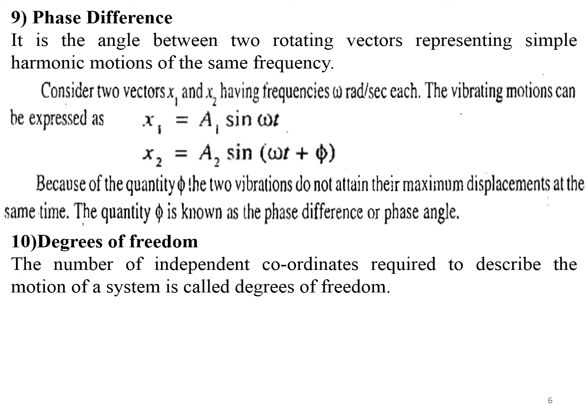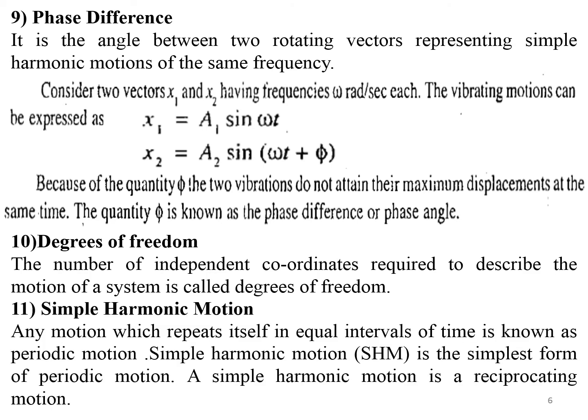Degrees of freedom: the number of independent coordinates required to describe the motion is called degrees of freedom. Degrees of freedom may be in the x, y, or z direction, or any combination, and there may be n number of degrees of freedom depending on the system. Simple harmonic motion is the simplest form of periodic motion, and it is a reciprocating motion.